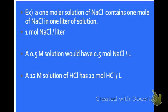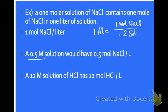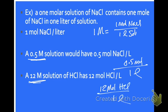If we're looking at a one molar solution of sodium chloride, 1M means you would have one mole of sodium chloride in one liter of solution. If you had a 0.5 molar solution, you would have 0.5 moles of sodium chloride in one liter. If you had a 12 molar solution of hydrochloric acid, that means you would have 12 moles of HCl in one liter. Any time you see that big M, that means moles of whatever you have over a total liter of solution.